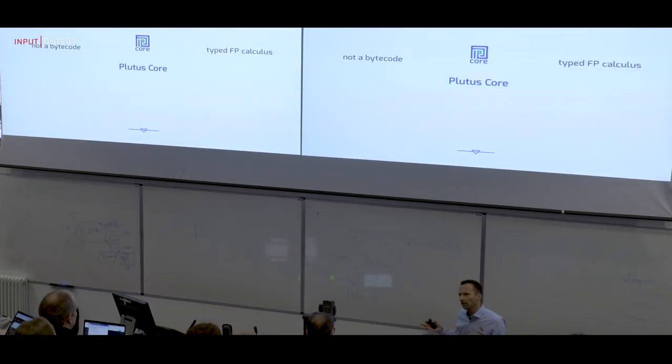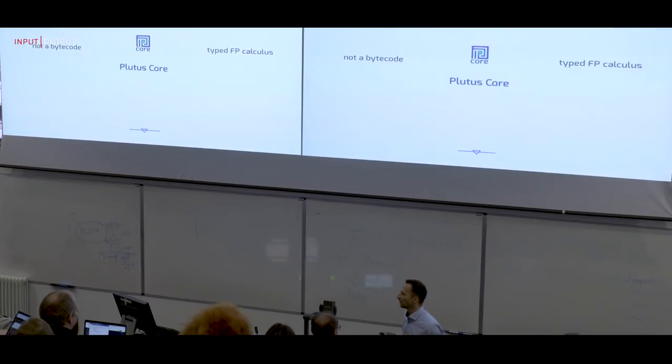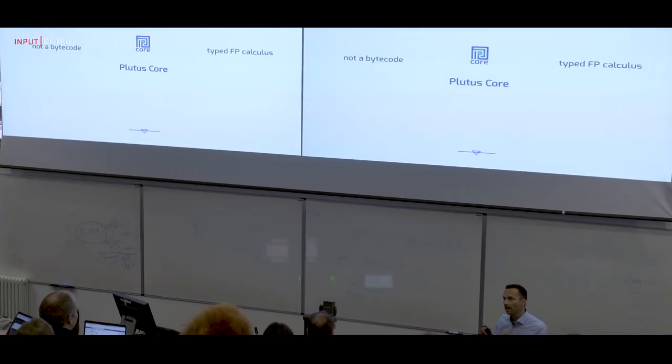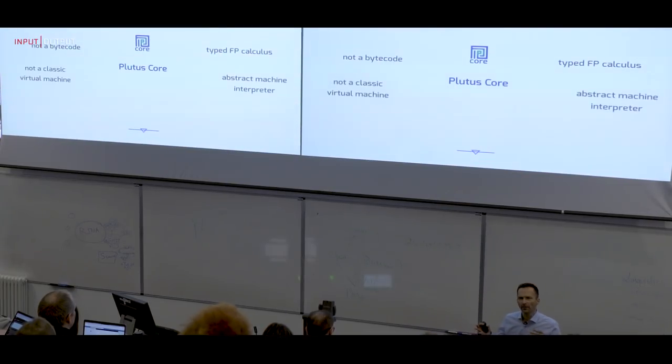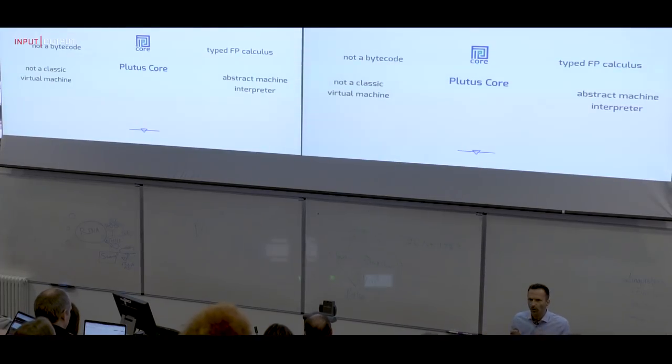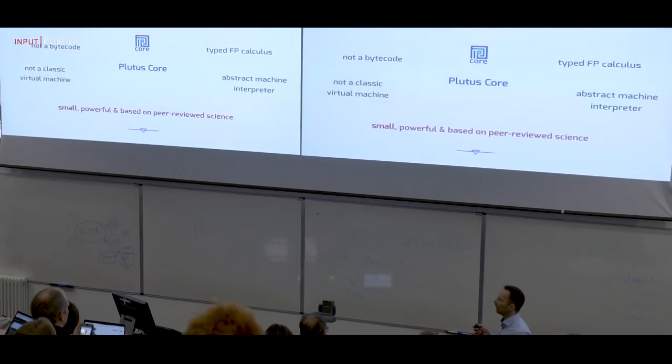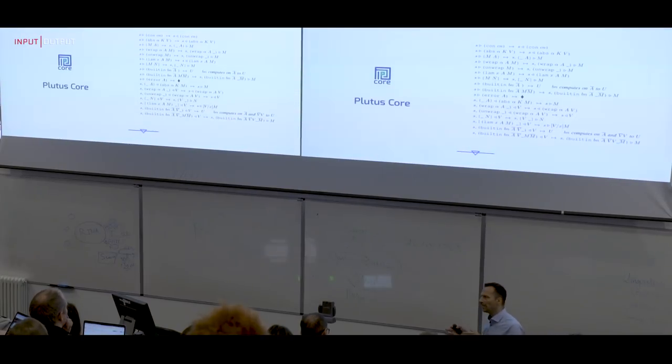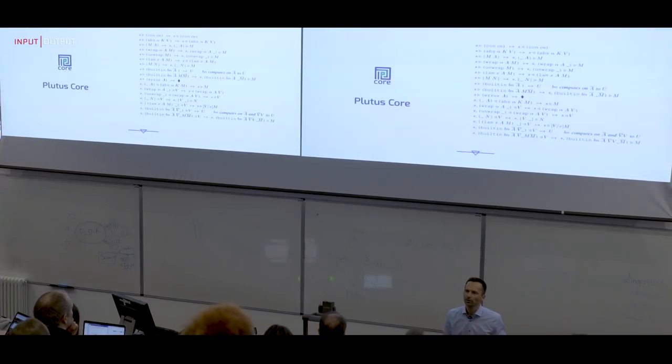And by this design, the type-directed design approach, we get to a very small, minimal system. So it's different to other virtual machines or similar things you have seen. It's not a bytecode. Everybody uses bytecodes. Why? Because Bitcoin had bytecode. And nobody came up with a new idea. Plutus Core is a typed functional programming language. A very small one, but it's a full functional programming language. We use something called an abstract machine interpreter, which is based on the operational semantics very directly on the operational semantics which we formalize of Plutus Core. And that's very small. It's small, meaning it's a simple system.